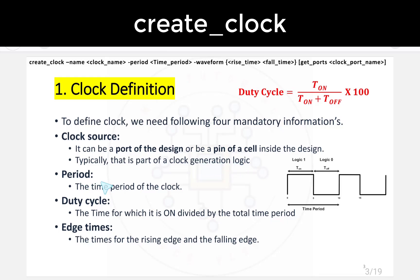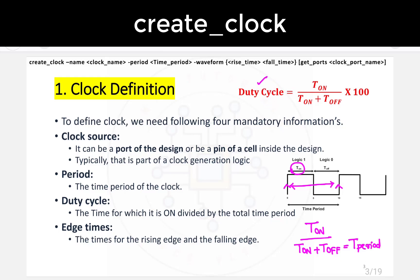The period is the time period of the clock — the distance from one rising edge to the next. Duty cycle is the on-time divided by the total time period: T_on divided by (T_on + T_off), which is simply the overall time period. The formula is: duty cycle = (T_on / overall time period) × 100.